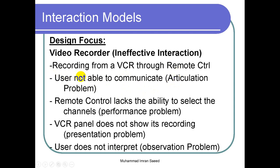Now say the user is able to communicate — there is no articulation problem, he knows how to press which button to get the recording done. But unfortunately, the remote control lacks the ability to select the channels; it cannot select channels or start recording. So if the user knows how to communicate but the machine is not taking that input and is not able to perform that task, it is known as a performance problem. The system, including the remote control, is not able to perform that particular action.